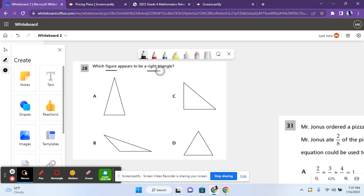Which figure appears to be a right triangle? So right triangles are triangles that have one side measuring 90 degrees. So a 90 degree angle triangle.